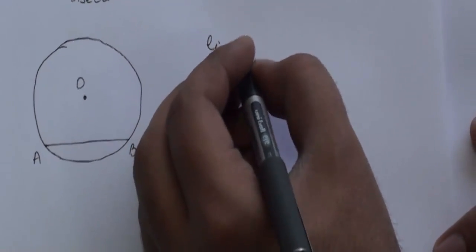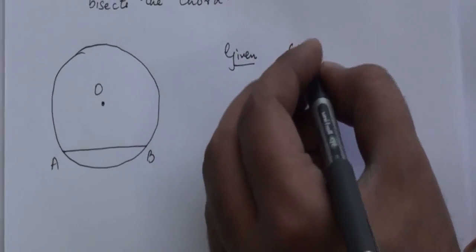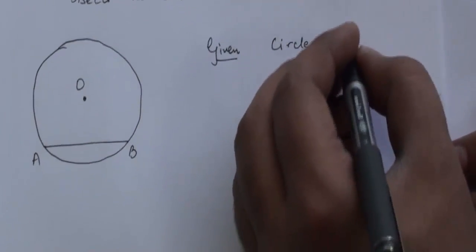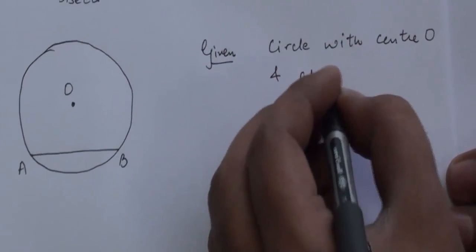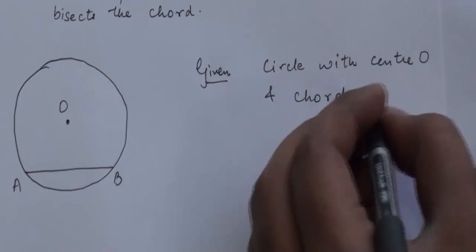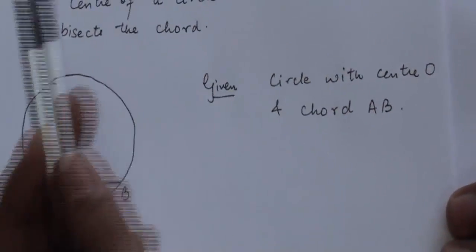And this is my chord AB. Now what I have is: given a circle with center O and chord AB. Now the theorem said,